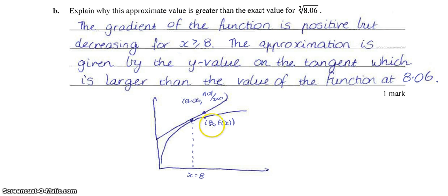So this should actually be an 8.06, I've just realized. So we're trying to show that this point here, which is the 401 over 200, is bigger than this point here. So what you're really saying in words is that the gradient of the function is positive, but it's decreasing. So the gradient of the function is positive, but the gradient is getting smaller as we go along here.